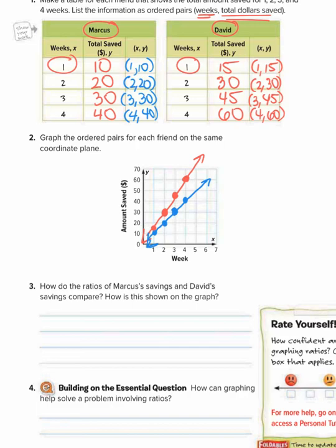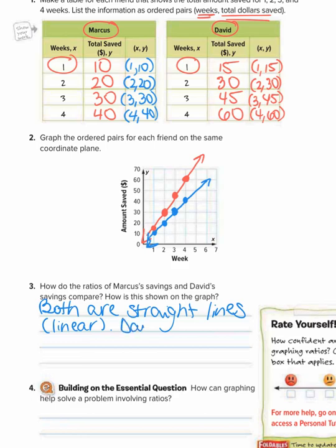Number 3, how do the ratios of Marcus's savings and David's savings compare? And how is this shown in the graph? So we could say that both are straight lines, which means that they both save money consistently. We call straight lines linear. So both are straight lines, they're earning money consistently, but we could see that David's line, which is the red line, is steeper because he saves more money more quickly.